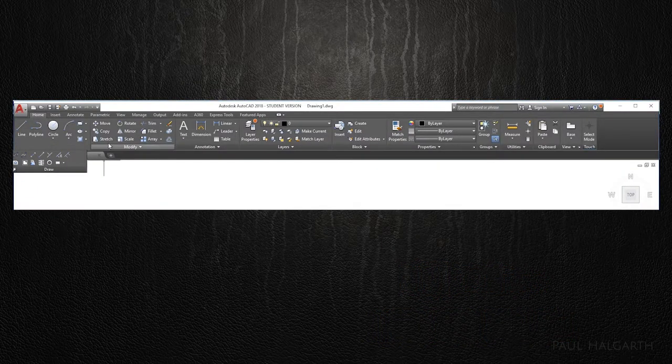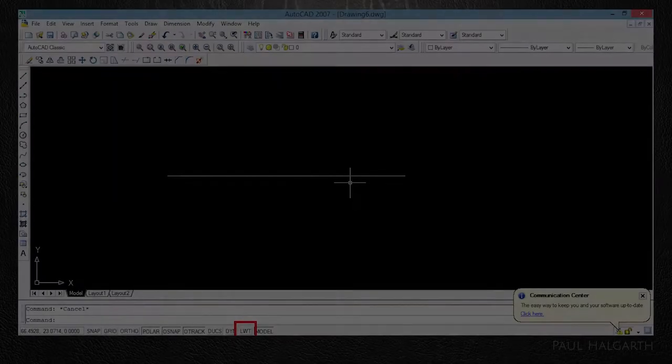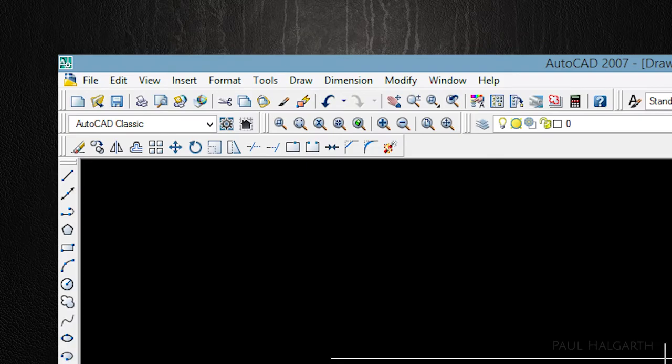The ribbon has been developed further than the Microsoft's version actually and allows the users to fully customise the tool layout. Previous versions used a layout now called AutoCAD Classic which used the familiar file, edit and help menus that were dropdowns at the top of the screen.